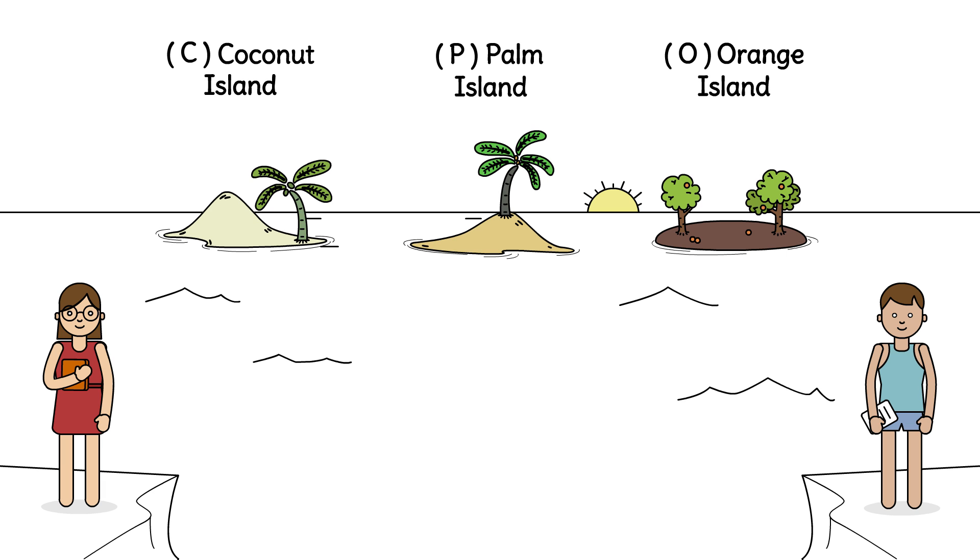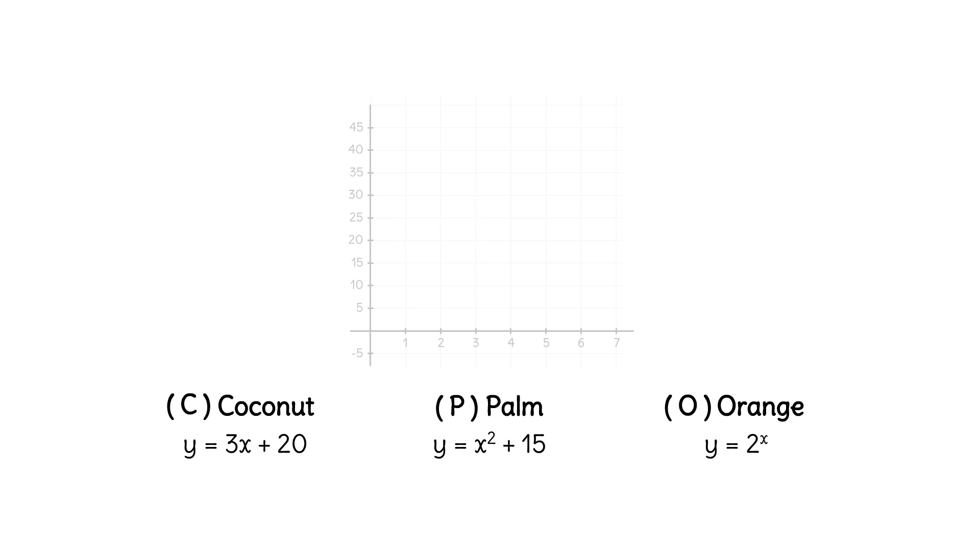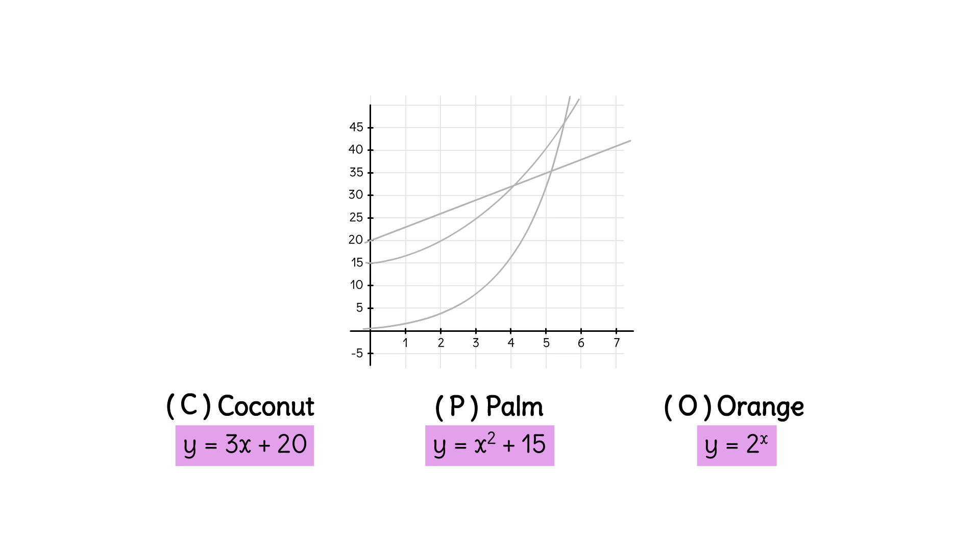They counted the number of turtles on each island starting in year zero and collected data over the years. They found functions relating the years to the number of turtles on each island. Here are the functions for the turtle populations on each island. X represents the year and Y represents the number of turtles for each year. Here are the graphs for each function. Can you match each equation with the correct graph?